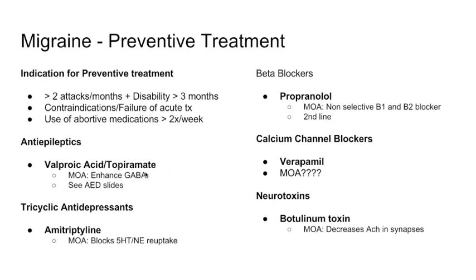I really want you to know topiramate and valproic acid — they are very common test questions. They will give you a story about a patient with recurrent headaches and ask what medication to put them on. The answer will be valproic acid or topiramate. The mechanism of action and side effects are covered in the anti-epileptic section.